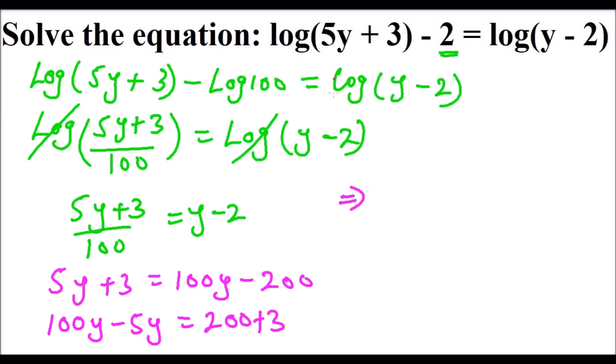This means that when you add, you get 95y = 203, and this means that I would divide both sides by 95. y = 203 divided by 95, which is the way you go about it.